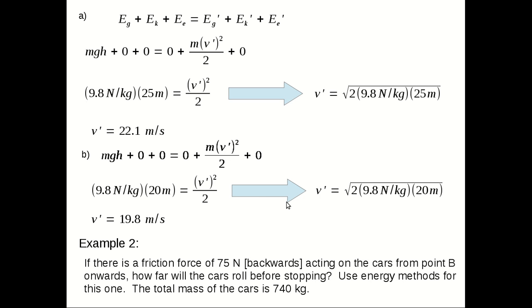So after point B, what happens if there's some friction and the cars are going to stop? Let's have a look at that. If the friction force is 75 newtons backwards, acting on the cars from point B onwards, how far will the cars go before stopping? We're going to use energy methods to solve this part. We could use the five equations of motion and Newton's laws, but we won't. We'll use energy. And the total mass of the cars is given here at 740 kilograms.